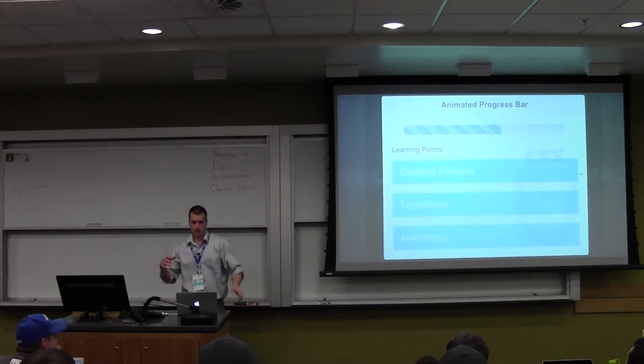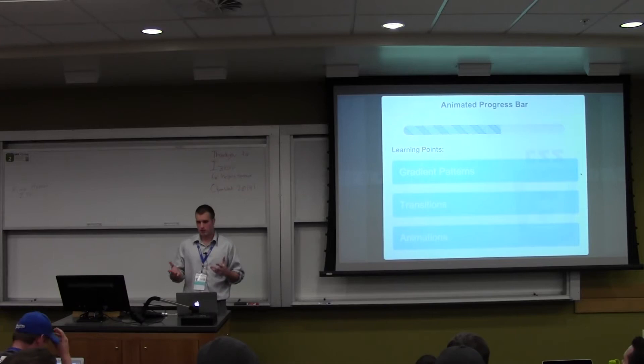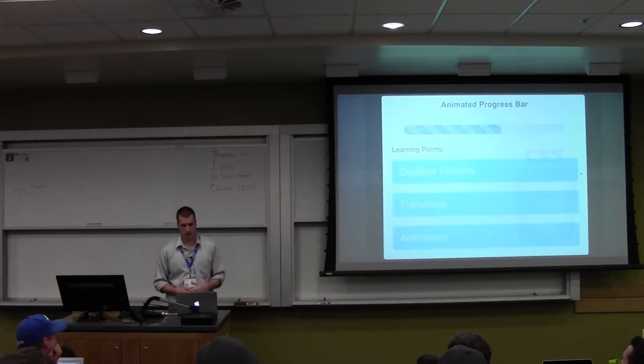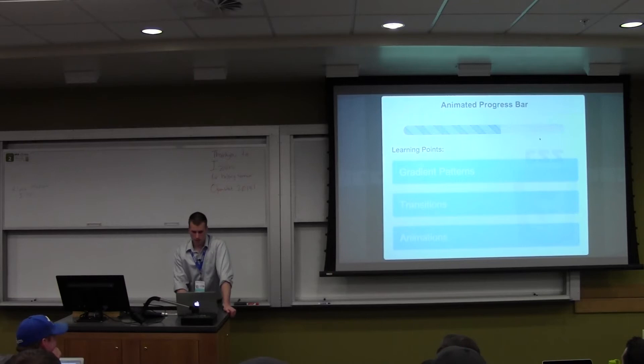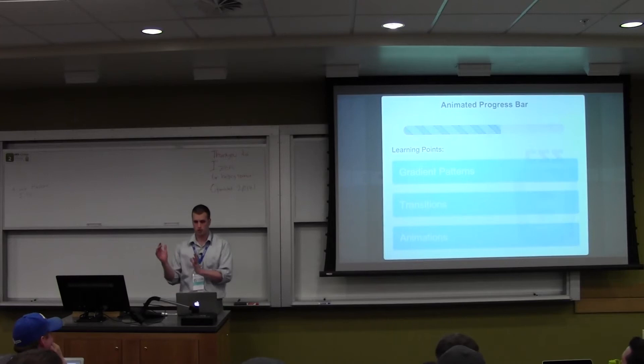Next example: we're going to look at an animated progress bar. Some of these examples are fairly contrived — just a way to bring a bunch of these principles together — showing what you can do and giving you the tools you need. With this example we're going to be talking about gradient patterns, transitions, and animations. We're going to want candy stripes to be animating across the bar as the bar is advancing.